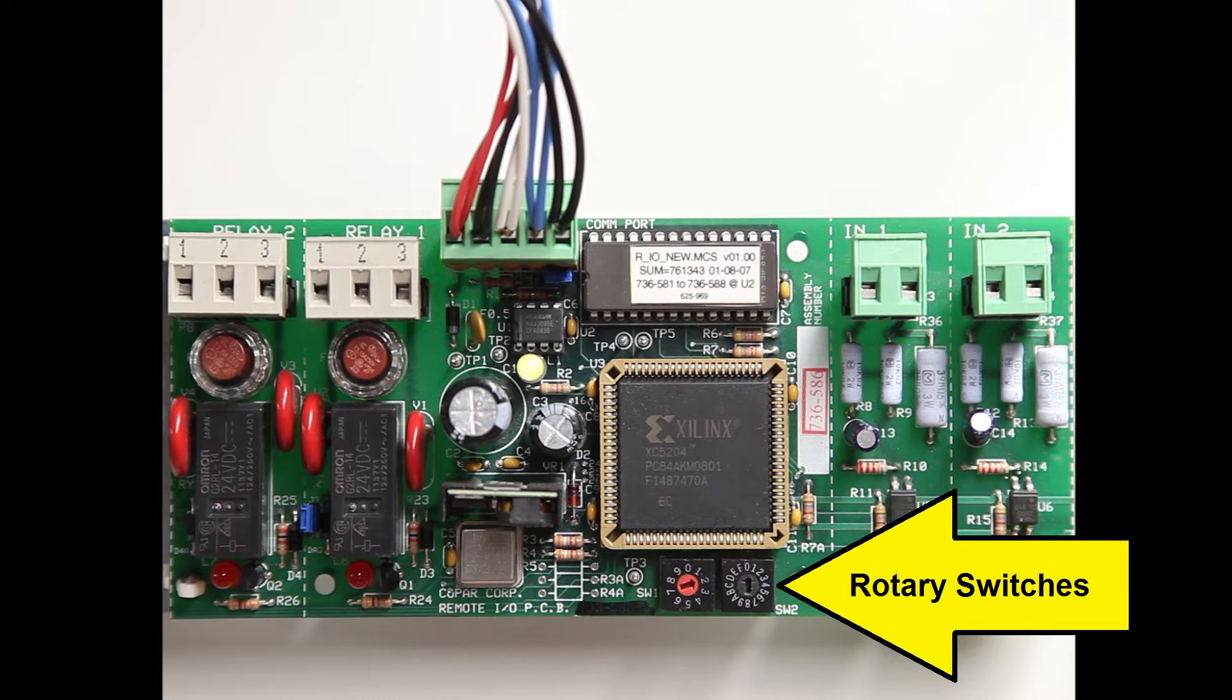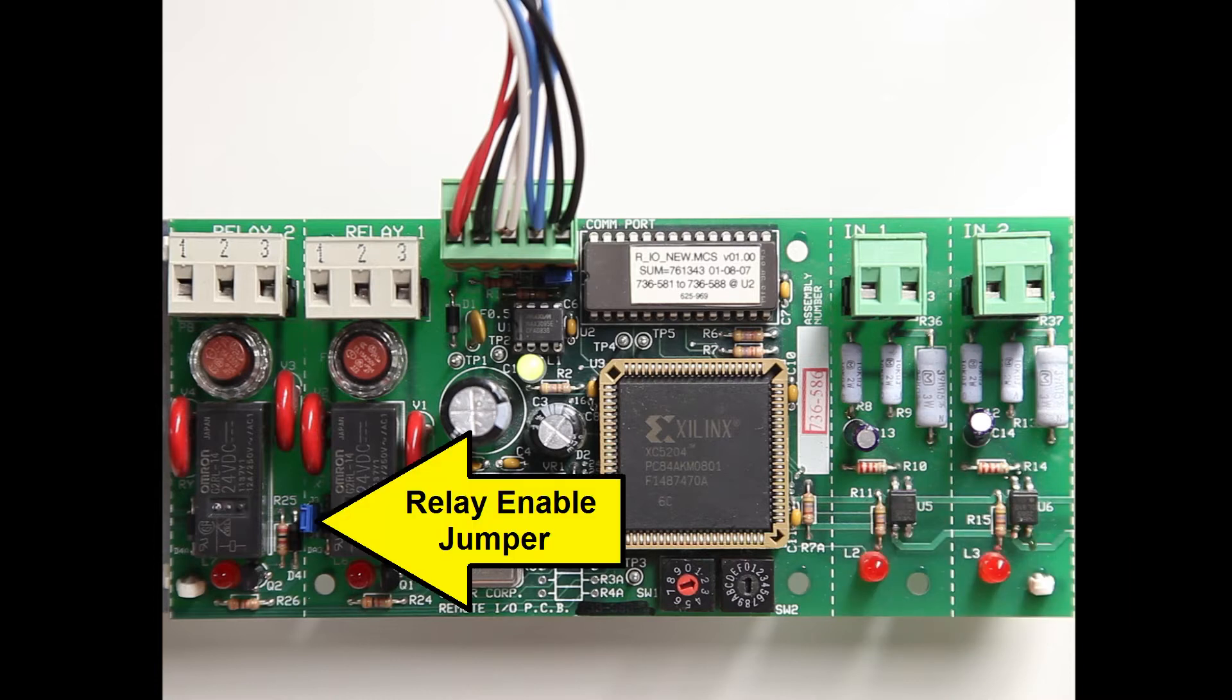These two rotary switches are used to address the card. Some cards, such as this one, also have a jumper which enables the relays. Normally, this jumper should always be on. Removing the jumper prevents the relays from functioning.